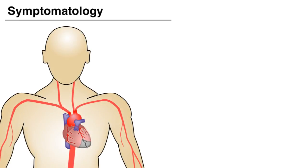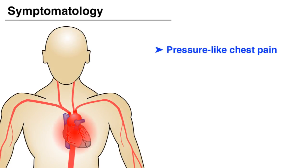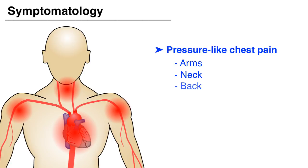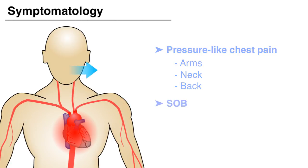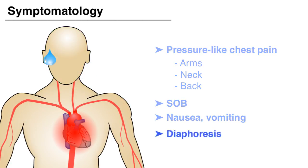Patients complain classically of pressure-like chest pain radiating to the arms, the neck, or the back, often accompanied with shortness of breath, nausea, and/or diaphoresis.